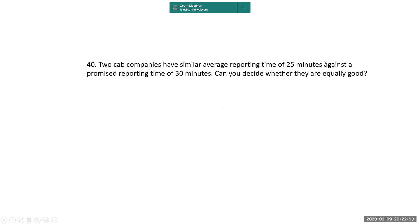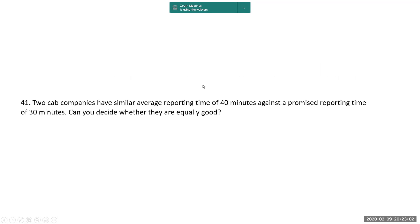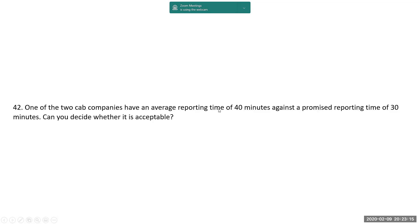Two cab companies have similar average reporting time of 25 minutes against the promised reporting time of 30 minutes. Can you decide whether they are equally good? No — because you have to find out how the mean time is arrived at. Standard deviation is very important. Another scenario: a similar average reporting time of 40 minutes against the promised reporting time of 30 minutes. Can you decide whether they are equally good? No — 40 minutes is too high.